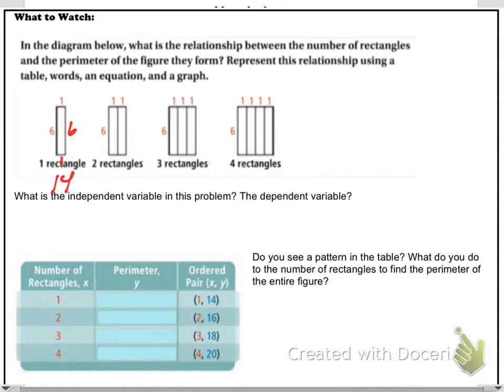You will see that if we complete the dimensions here on the rectangle, that gives us a perimeter of 14 for one rectangle. Completing the dimensions and adding all the dimensions up, we get 16 for a total perimeter on two rectangles. Three rectangles would be 18. Four rectangles, it's 20, and so on.